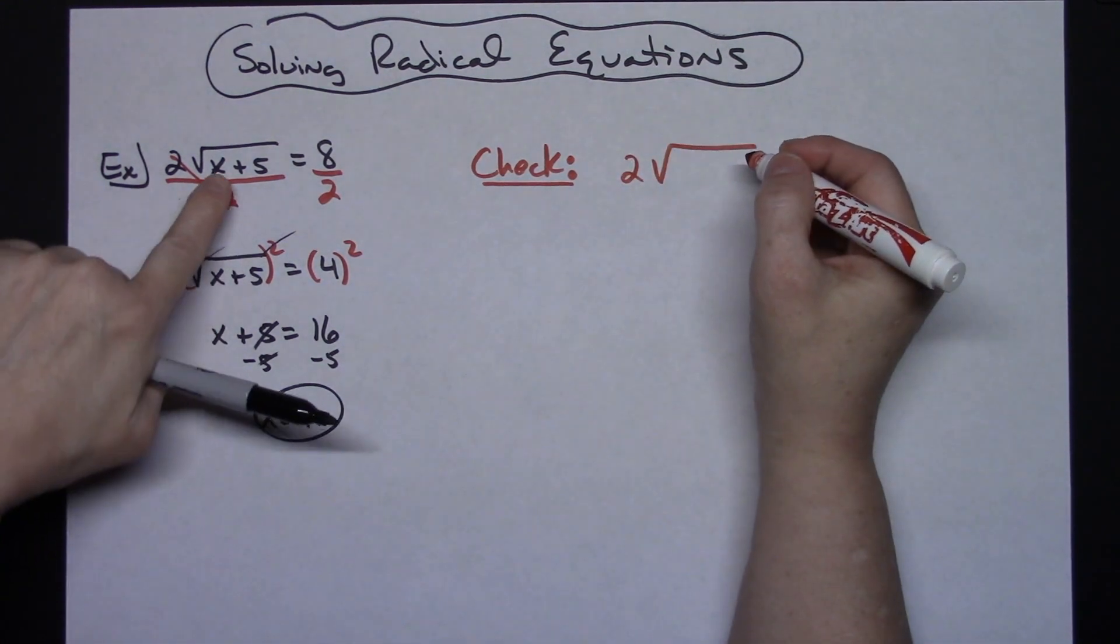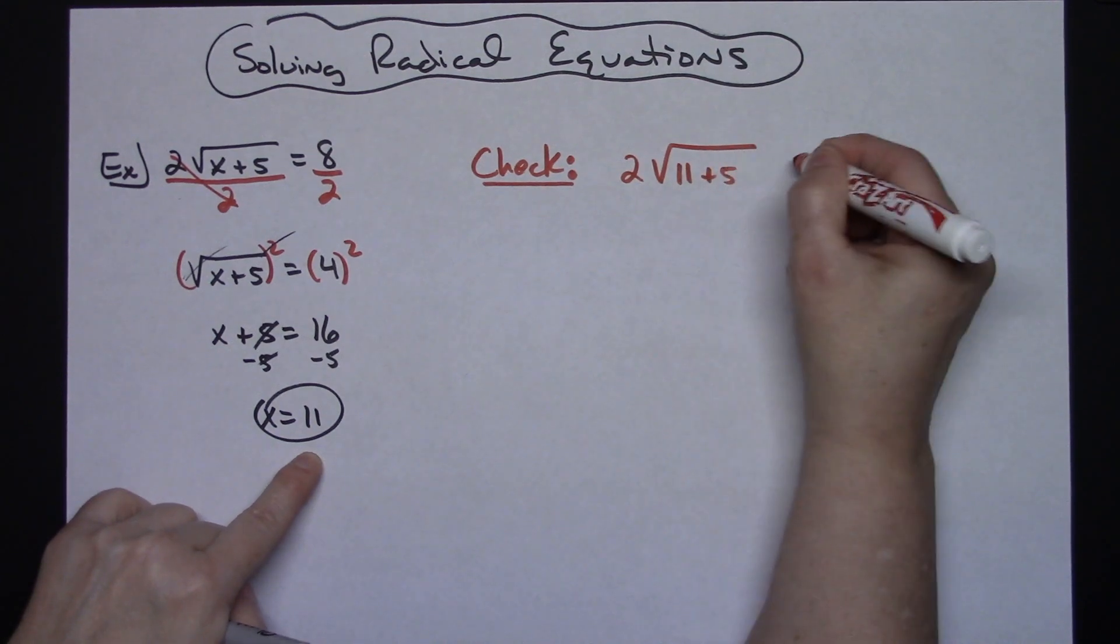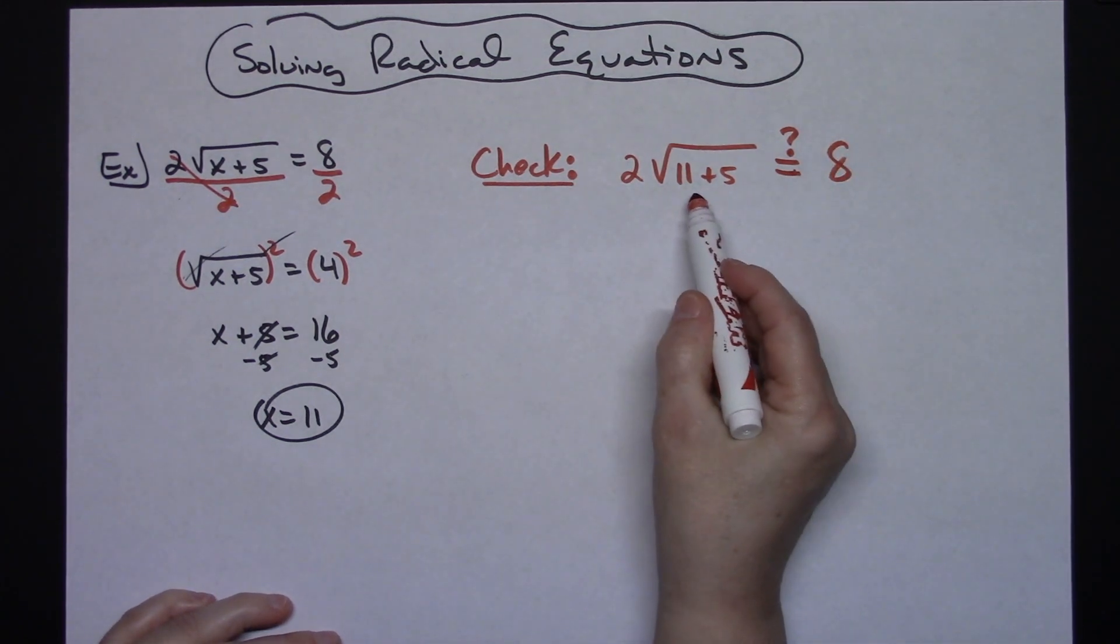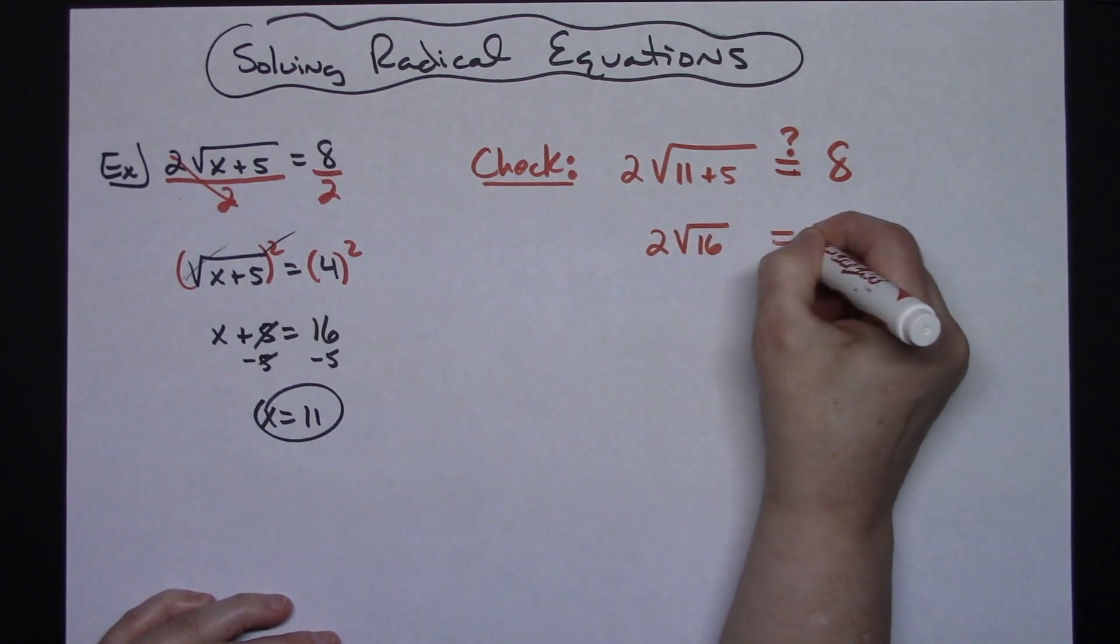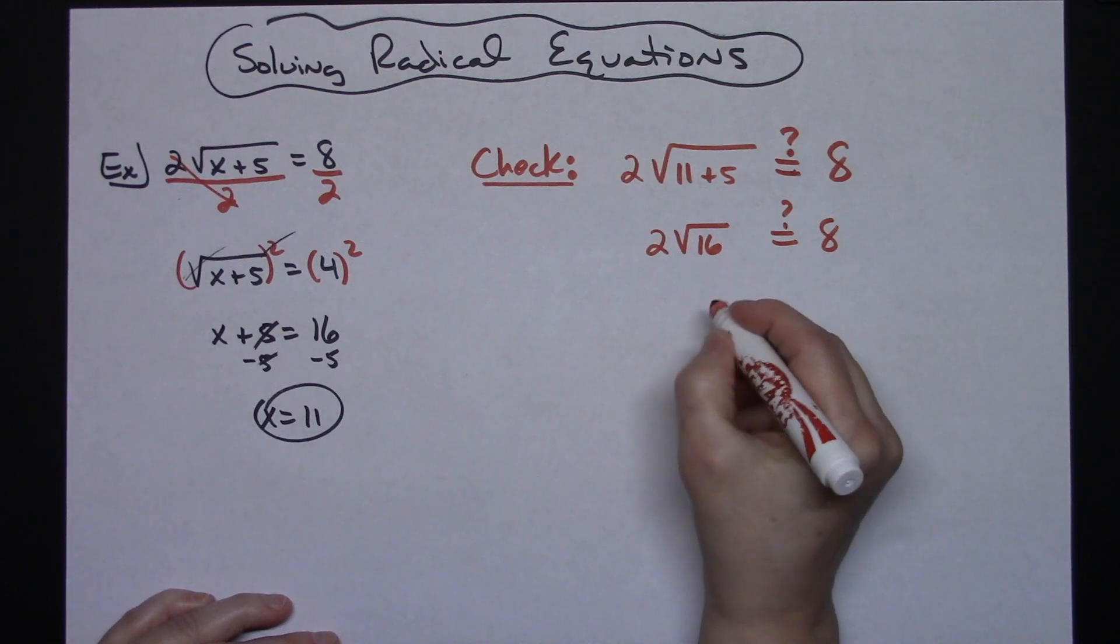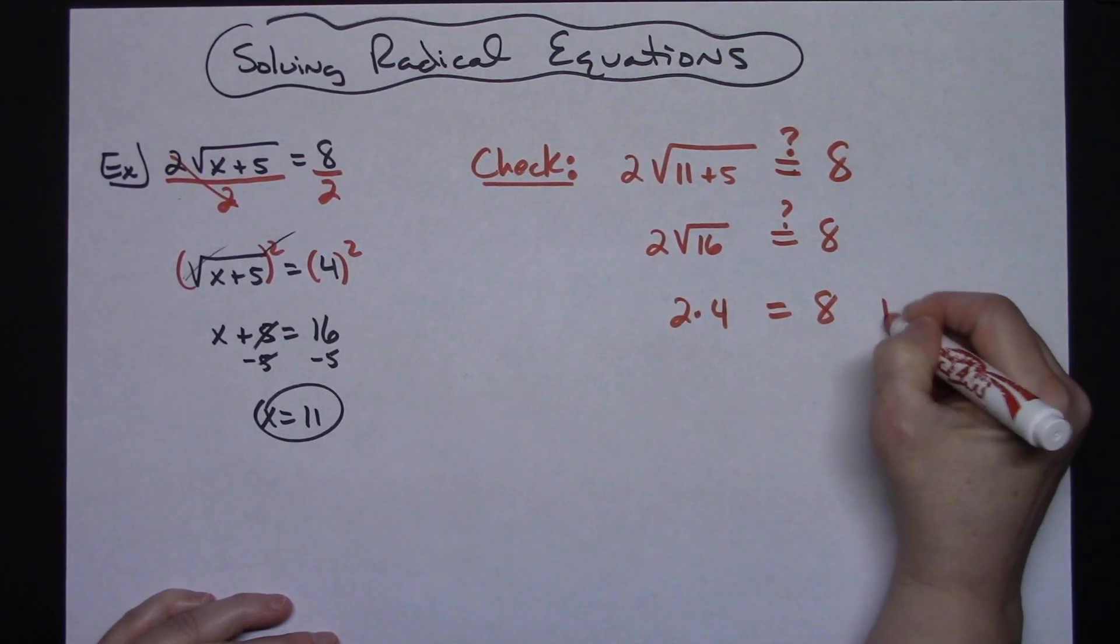...do 2 times the square root of—let's replace that x with 11—so 11 plus 5, and we're going to ask ourselves, is that equal to 8? Well, let's simplify: 11 plus 5 is going to give me 16. So 2 times the square root of 16—is that equal to 8? Well, square root of 16 is 4, so this is 2 times 4, and indeed that is 8.